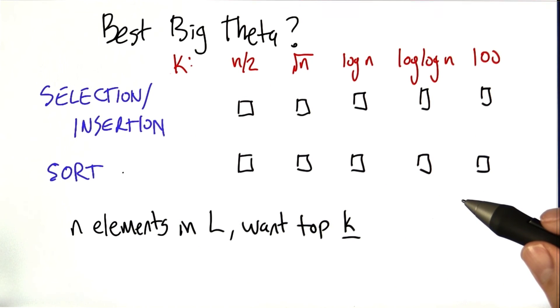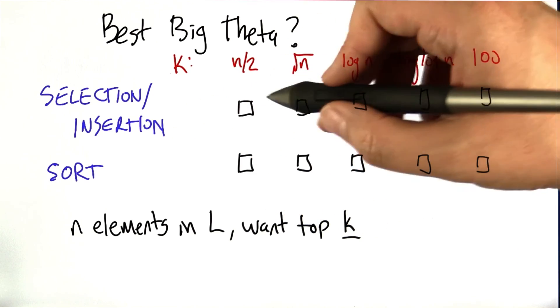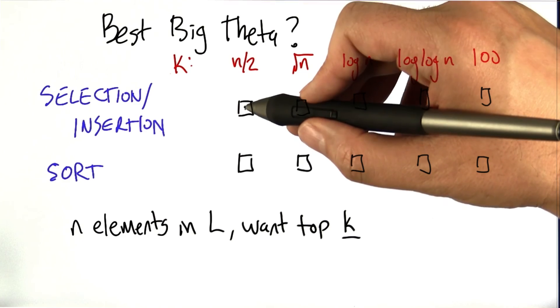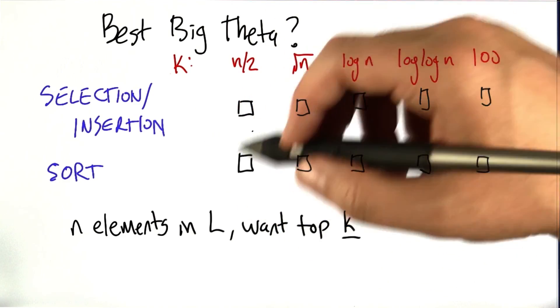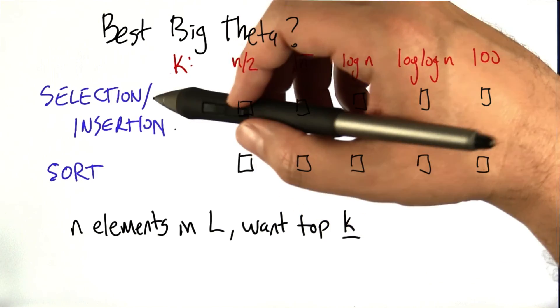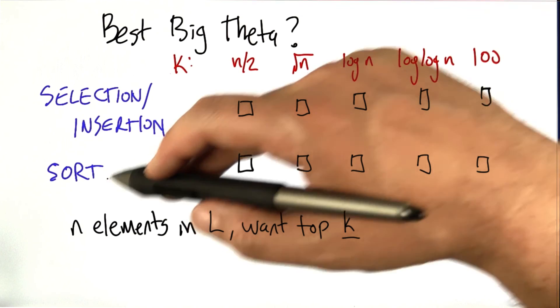So what I'd like you to do is for each of these columns, check this box or that box, or if they are big theta of each other. In other words, from an asymptotic standpoint, this algorithm and this algorithm will run the same worst case asymptotically, then check both of the boxes.